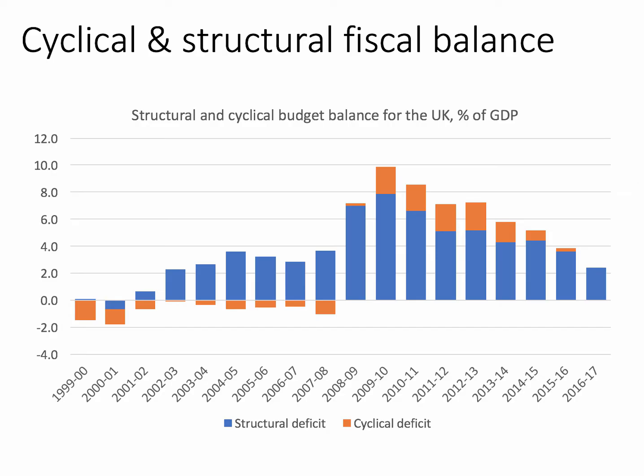The structural deficit increased substantially from around 2008–2009 onwards. The UK economy went into recession in 2008, and the orange segment of the chart — the cyclical deficit — went from surplus to deficit. This is sometimes known as the workings of the automatic stabilizers: in a recession, tax revenues fall and government spending on welfare goes up, making a cyclical fiscal deficit almost inevitable. In 2009–2010, the fiscal deficit peaked at nearly 10% of the value of UK national output.